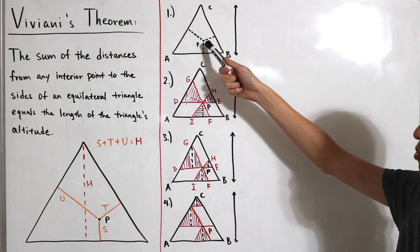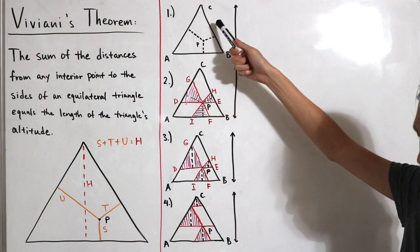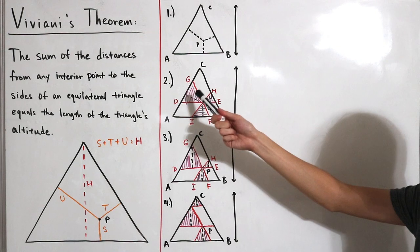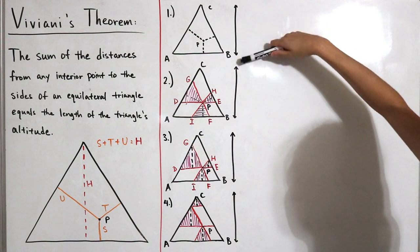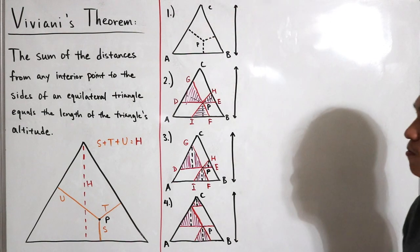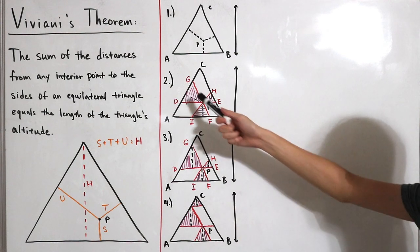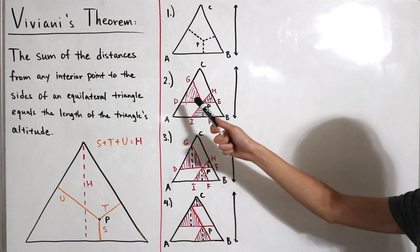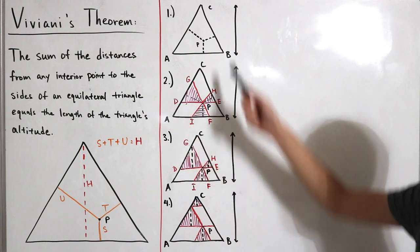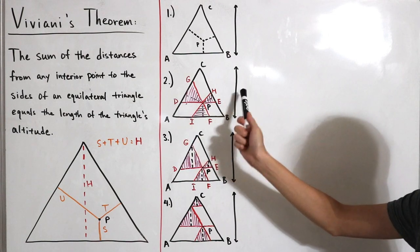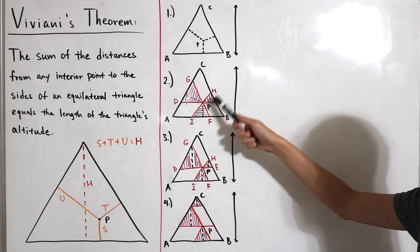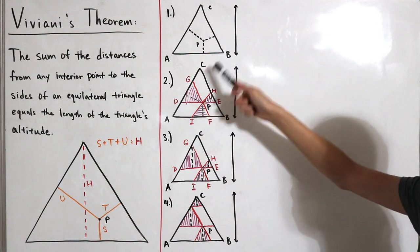Step 1: I draw the nearest (perpendicular) distance from any interior point P to each side of the equilateral triangle, labeling the triangle's vertices A, B, and C. I also define a line segment denoting the altitude of the whole triangle. Step 2: I construct line segments shown in red that are parallel to the sides of the triangle — line DE is parallel to AB.